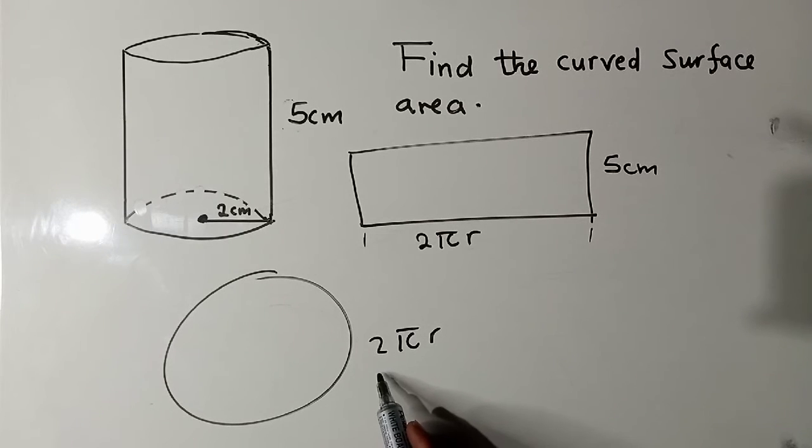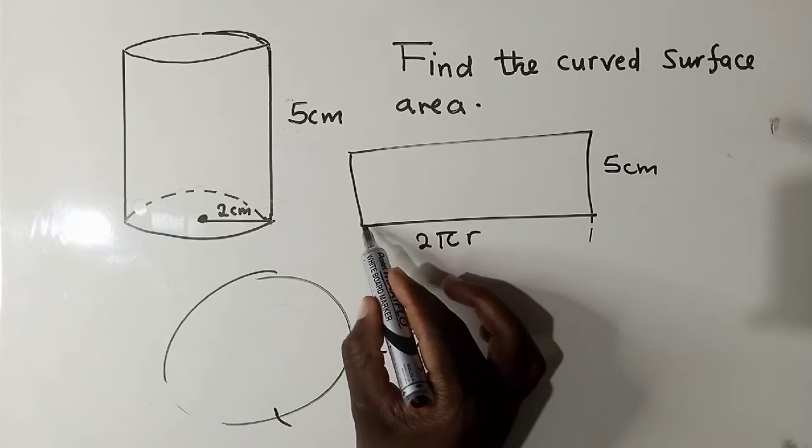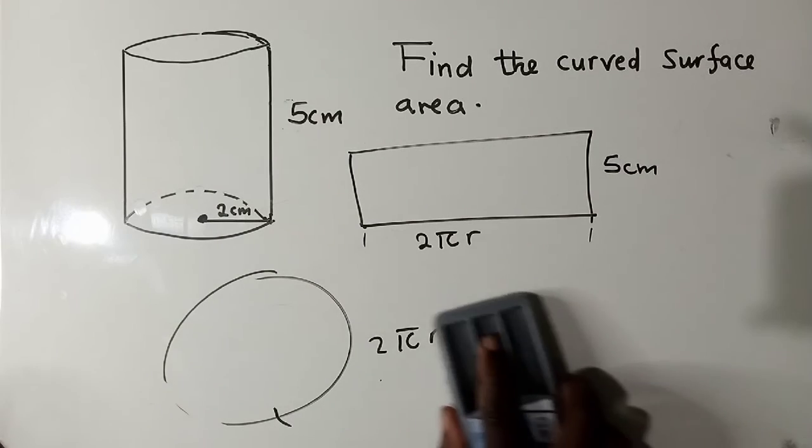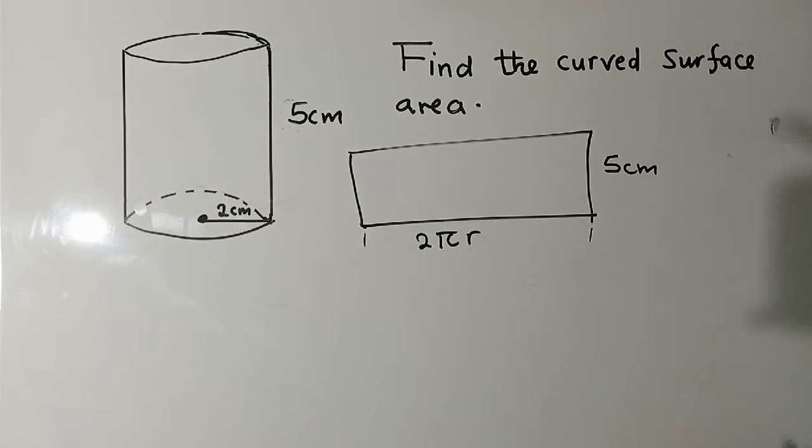This is the formula we use for circumference. So once this has been opened and straightened like this, it will be from here to here. The next thing here would just be to use the formula for finding area of a rectangle.